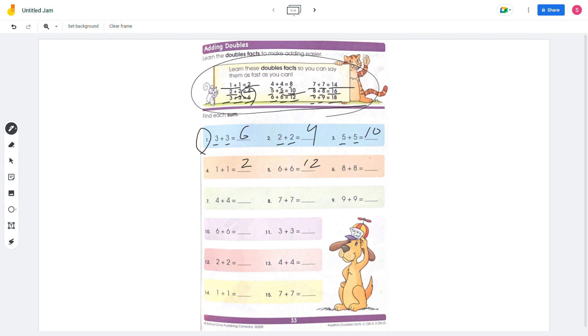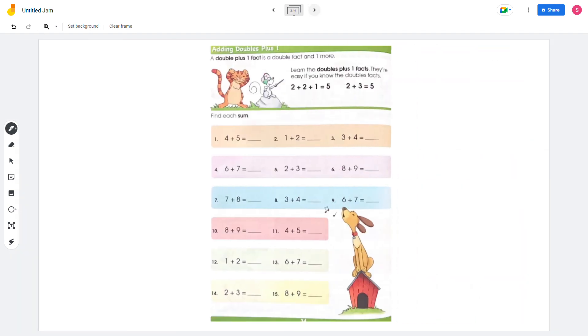8 plus 8 is 16. 4 plus 4 is 8. 7 plus 7 is 14. 9 plus 9 is 18. 6 plus 6 is 12. 3 plus 3 is 6. On the next page,